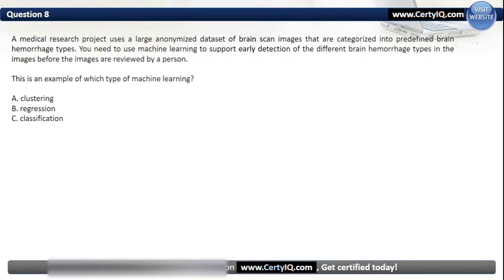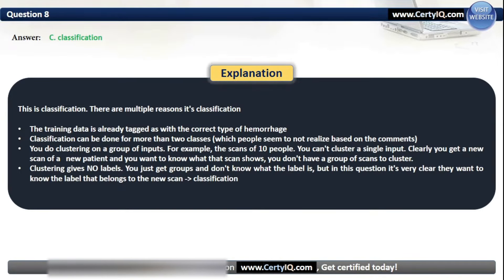Question 8. A medical research project uses a large anonymized dataset of brain scan images categorized into predefined brain hemorrhage types. You need to use machine learning to support early detection of the different brain hemorrhage types before images are reviewed by a person. This is an example of which type of machine learning? Options: A. Clustering, B. Regression, or C. Classification. The correct answer is C. Classification. The training data is already tagged with the correct type of hemorrhage. Classification can be done for more than two classes. Clustering gives no labels — you just get new groups and don't know what the label is. In this question, they want to know the label that belongs to the new scan, thus classification.